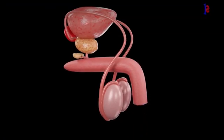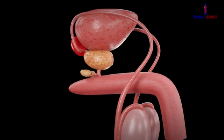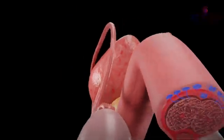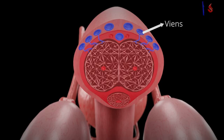First, we cut the penis from the front to see its internal structure. After cutting, we can see there are many veins on the upper part of the penis.